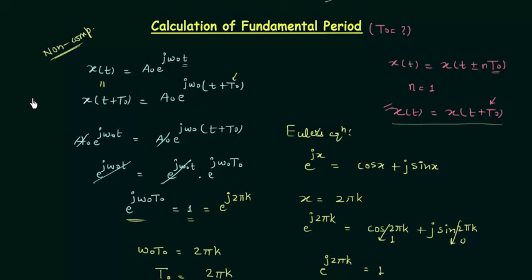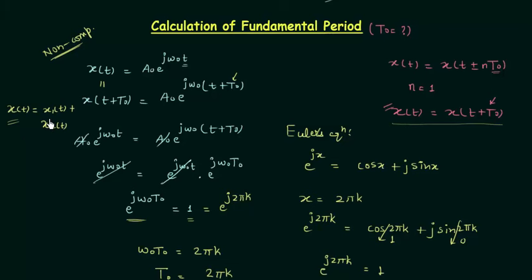Signals having more than one function or signal are called composite signals. For example, if there is a signal x(t) which is equal to x1(t) plus x2(t), this type of signal is called a composite signal. Calculation of the fundamental time period for this type of signal is a little bit complicated. You need to calculate the fundamental periods of the signals individually, and after performing certain operations you can tell whether the composite signal x(t) is periodic or not.